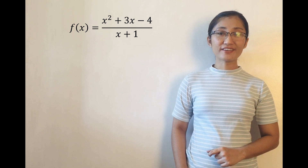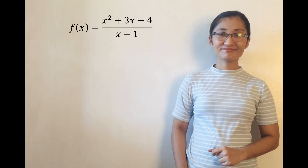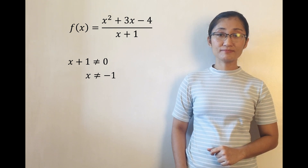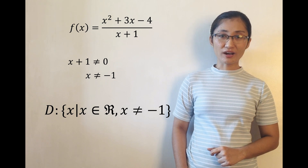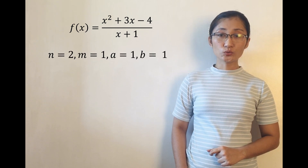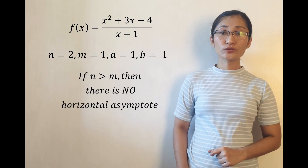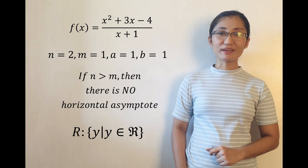Now, can you determine the domain and range faster? Third example: determine the domain and range of f(x) = (x²+3x−4)/(x+1). Since denominator x plus 1 is not equal to 0, then x is not equal to negative 1. Hence, domain is x such that x is an element of real numbers but x is not equal to negative 1. For the range: n equals 2, m equals 1, a equals 1, b equals 1. Since n is greater than m, there is no horizontal asymptote, so there is no restricted value for y. Thus, the range is y such that y is an element of real numbers.